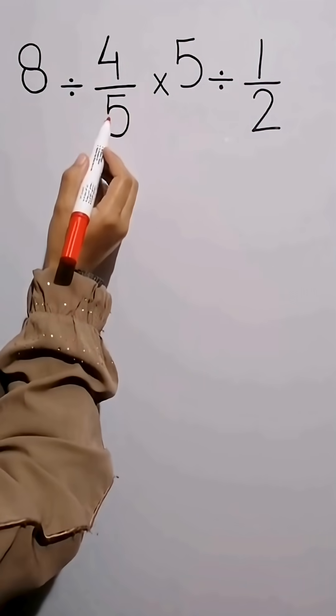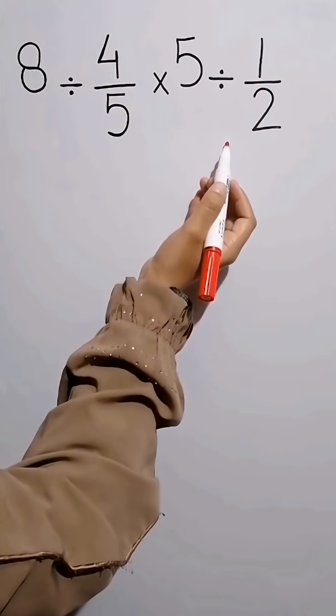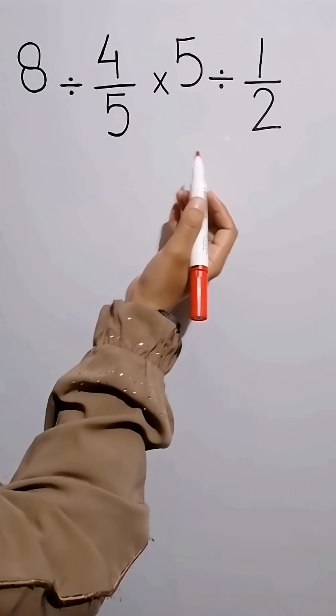8 divided by 4 over 5, then times 5 divided by 1 over 2. 98% of people get tricked and choose the wrong answer. Let's break it down and solve it together.